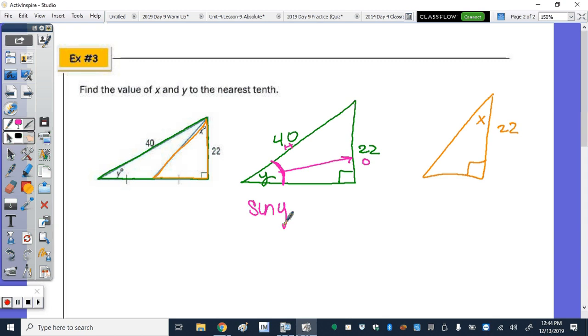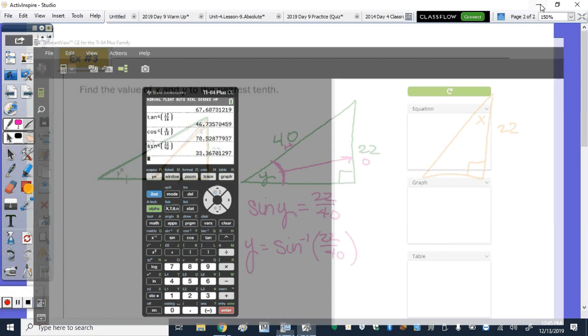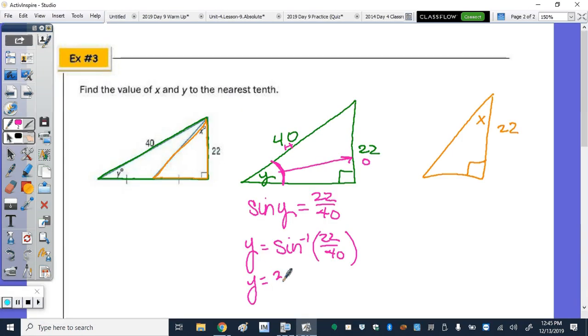So the sine of y equals 22 over 40. So to find y, the angle, all we need to do is type in the calculator using that inverse sine button, 22 over 40, to come up with the measure for angle y. So going to the calculator, second sine of 22 over 40. Get 33.367, and we're going to round to the nearest tenth, so that's approximately 33.4. So y equals 33.367, and y is approximately 33.4.